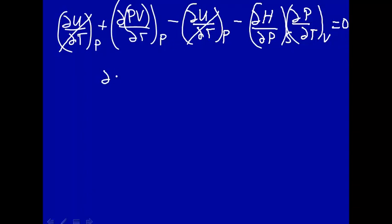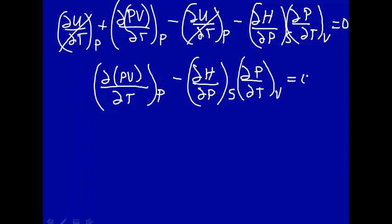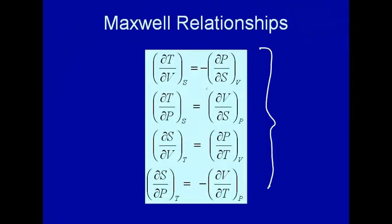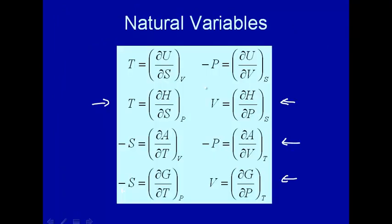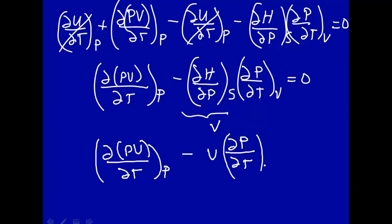So we rewrite this equation as: how PV changes with temperature at constant pressure, minus how H changes with pressure at constant entropy times how P changes with T at constant volume, equals zero. How H changes with pressure at constant entropy is indeed volume — that's from a Maxwell relation. So we rewrite as how PV changes with temperature at constant pressure, minus V times how pressure changes with temperature at constant volume, equals zero.